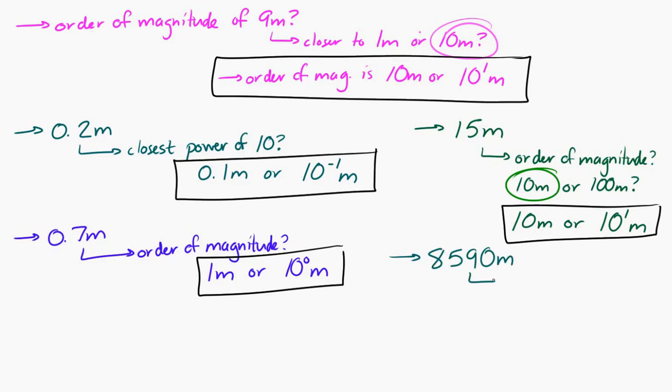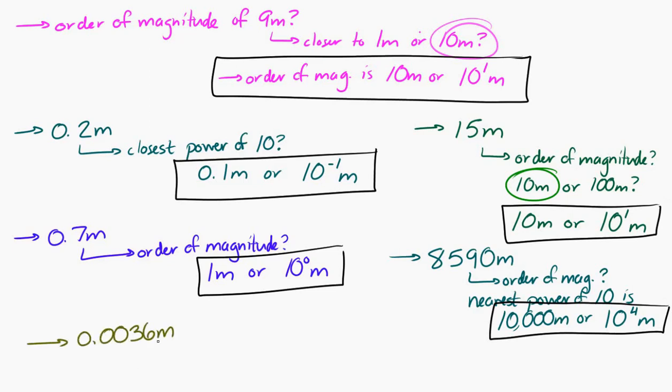8,590 meters, what's the order of magnitude of that? Well, the nearest power of 10 would be 10,000 meters, or 10 to the 4 meters. And if I had 0.0036 meters, what's the nearest power of 10 for that? Well, that's closest to 0.001 meters, or 10 to the minus 3 meters. That's all order of magnitude is.